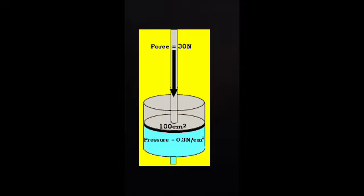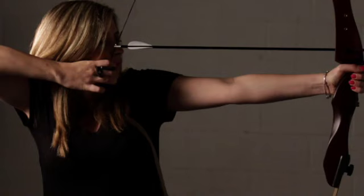All these forces can be divided into two groups: contact force and non-contact force. When one object applies force on another by direct physical contact, it is known as contact force — for example, muscular force and frictional force. When force is applied by one object on another from a distance without direct contact, it is known as non-contact force — for example, magnetic force, electrostatic force, and gravitational force.